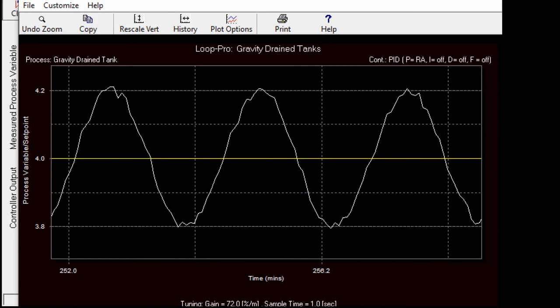So we got the ultimate gain to be 72 and the ultimate period to be something in the range of around 2.4 minutes. Then using the Ziegler-Nichols tuning rules, we can find out what will be the parameters for the controllers. Meaning if you choose a PI or PID controller, we can set the controller parameter according to those tuning rules.